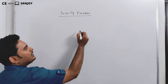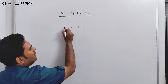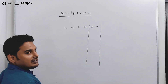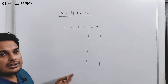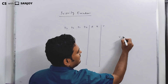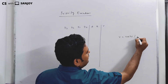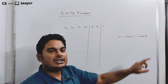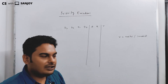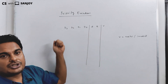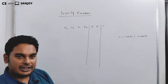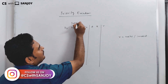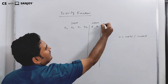Our inputs are D0, D1, D2, and D3. The outputs of the encoder are A and B. We also have a valid bit V. V indicates whether the input is valid or invalid — if we give input and that input is a valid input, V equals 1; if input is invalid, V equals 0. So A and B are outputs, and V is the validate bit.